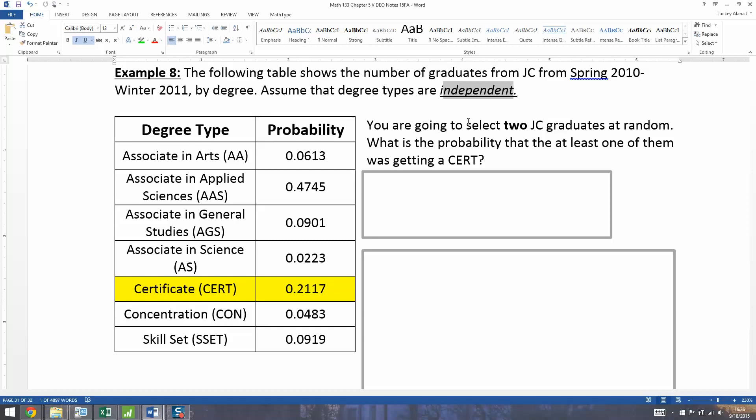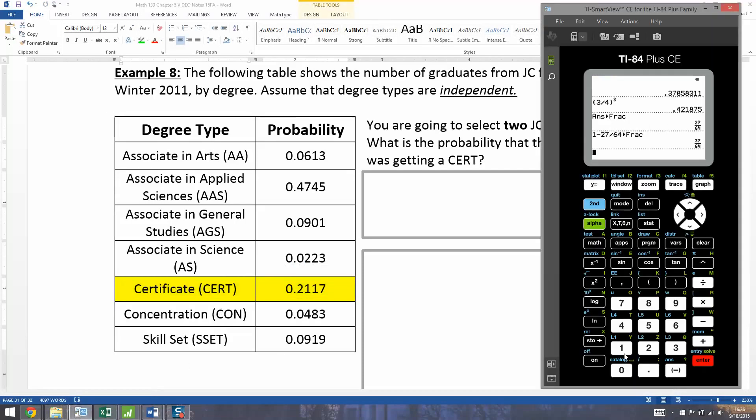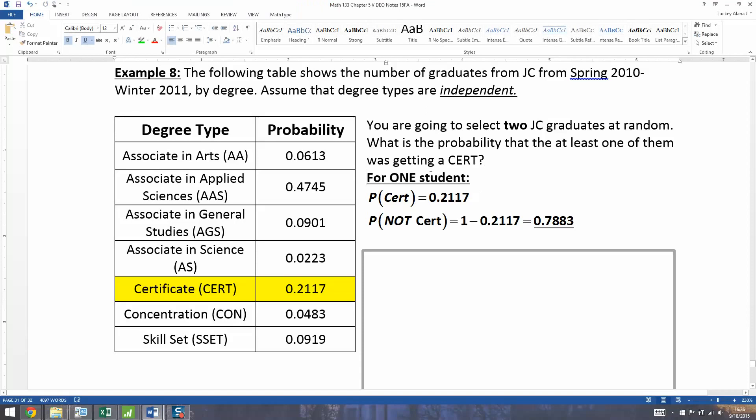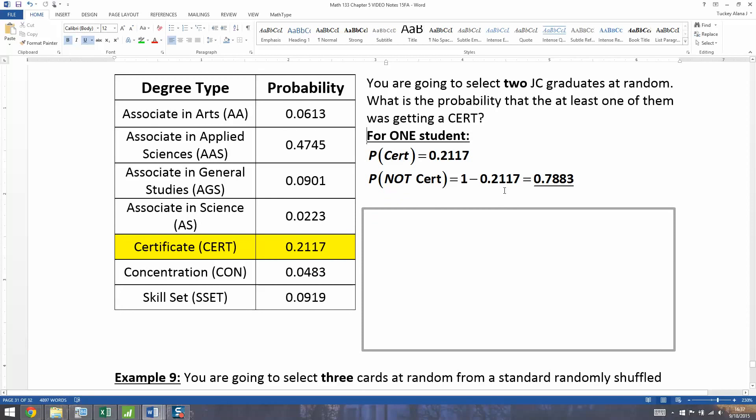So let's start with certificates. For a single student, the probability of getting a certificate is 0.2117. That means the probability of not getting a certificate is one minus 0.2117, which is 0.7883. So for a single student, you have the probability of certificate and the probability of not certificate. That's going to be helpful because we're going to use those building blocks in the actual problem.